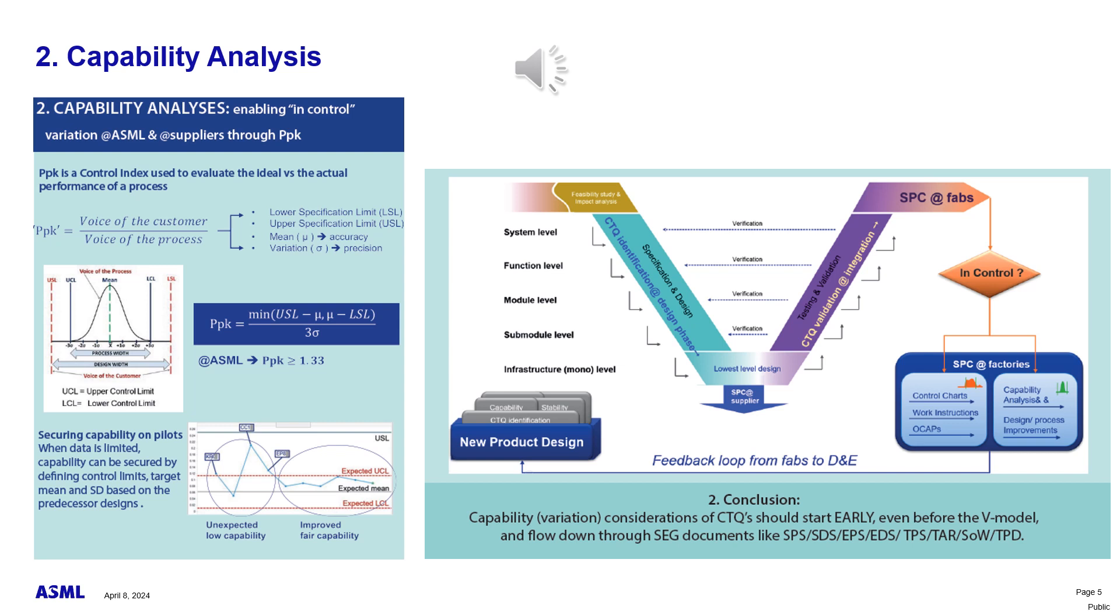The PPK result expresses whether an established process can meet the specifications consistently or not. We use a PPK equal or higher than 1.33 to define a capable process. When PPK is between 1 and 1.33, the process needs to be carefully monitored to identify any deviation. Processes with a PPK lower than 1 require an improvement.